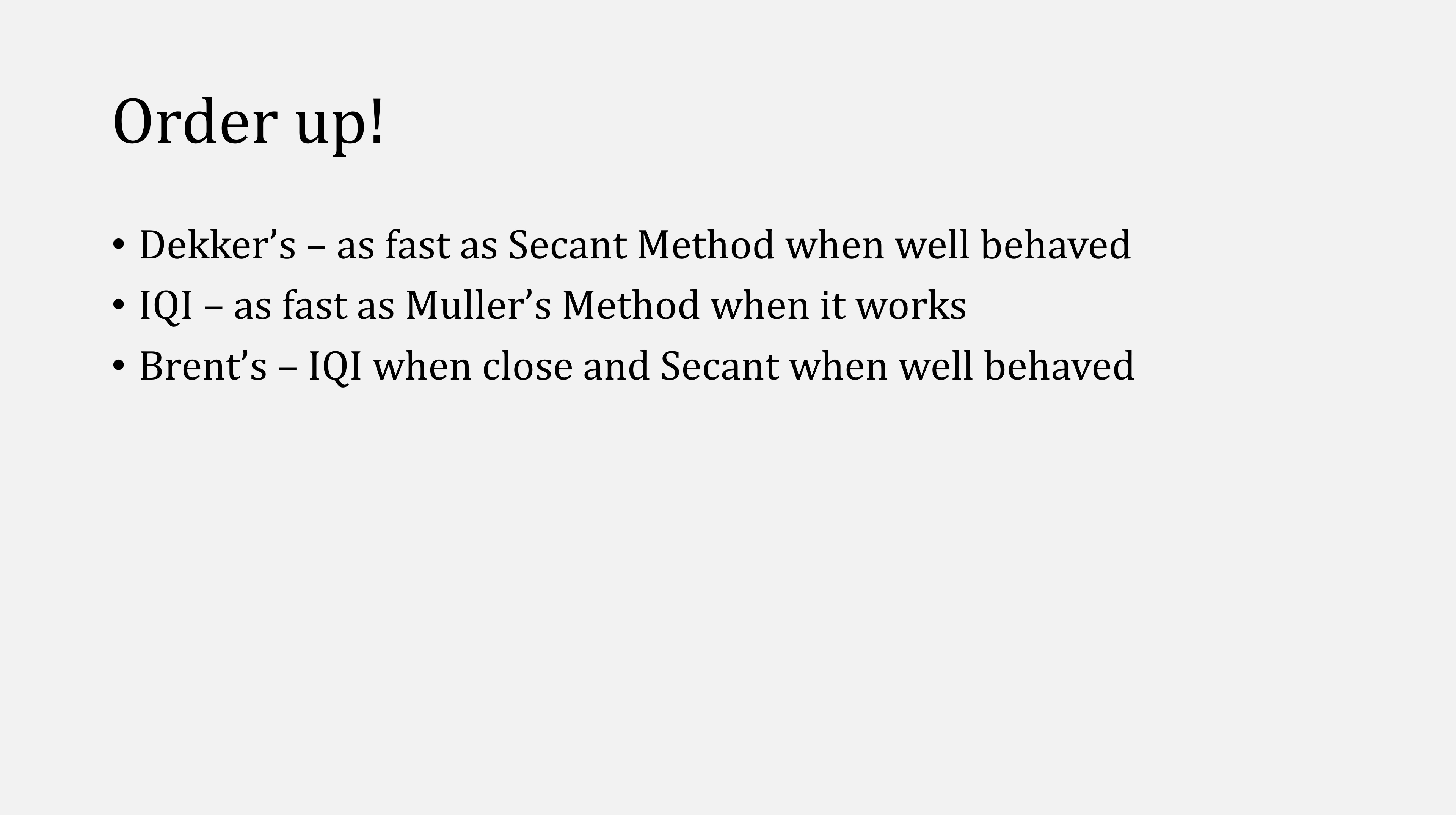Let's talk about the all-important order. Dekker's method is as fast as the secant method when the function is well-behaved, and IQI is as fast as Muller's method when it works. Brent's method is as fast as IQI and secant method when we're close and the function is also well-behaved, but we can simply refer to both Dekker's and Brent's method as superlinear, meaning they are faster than linear.